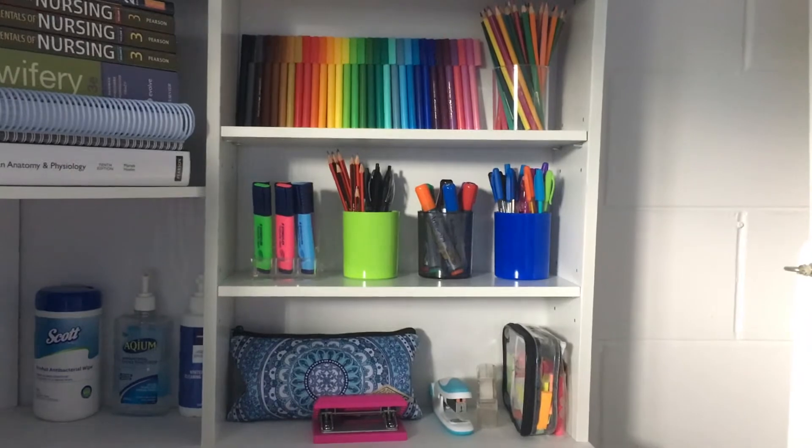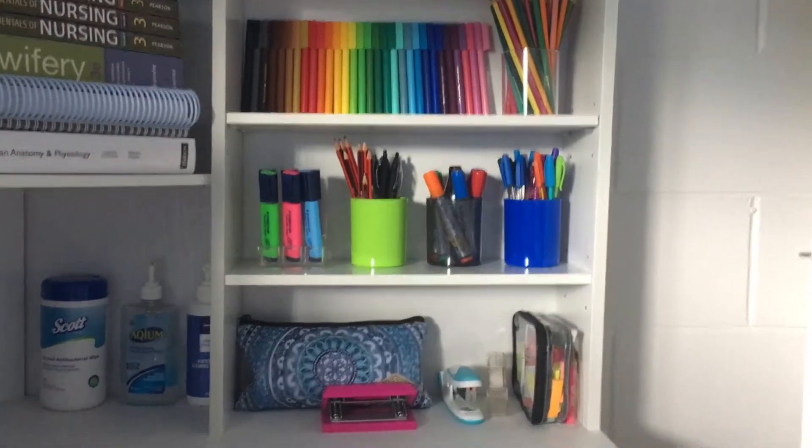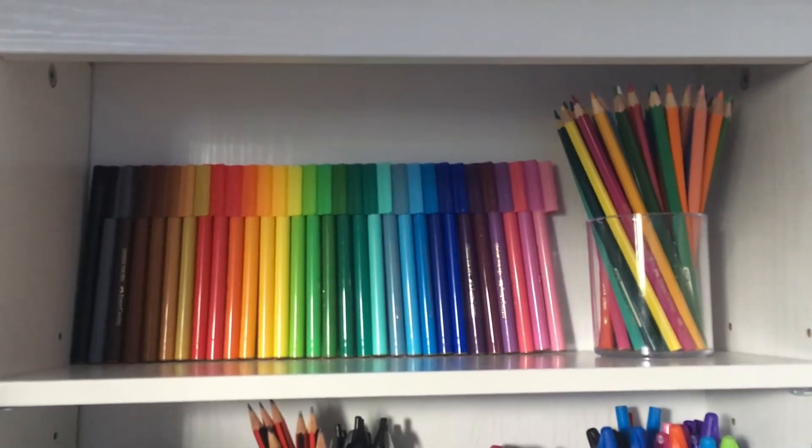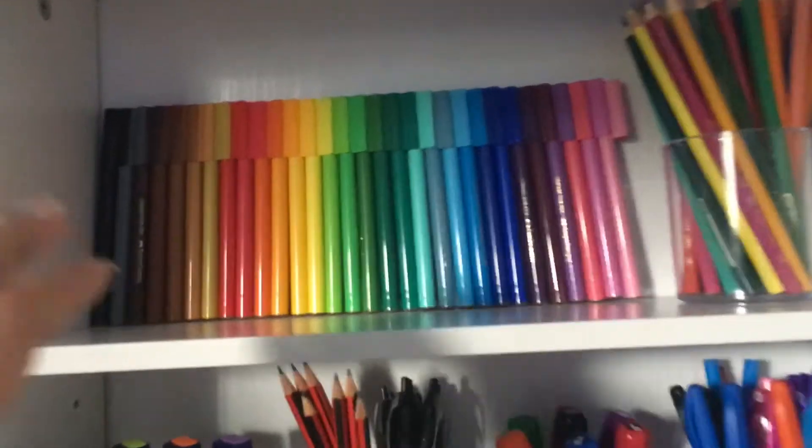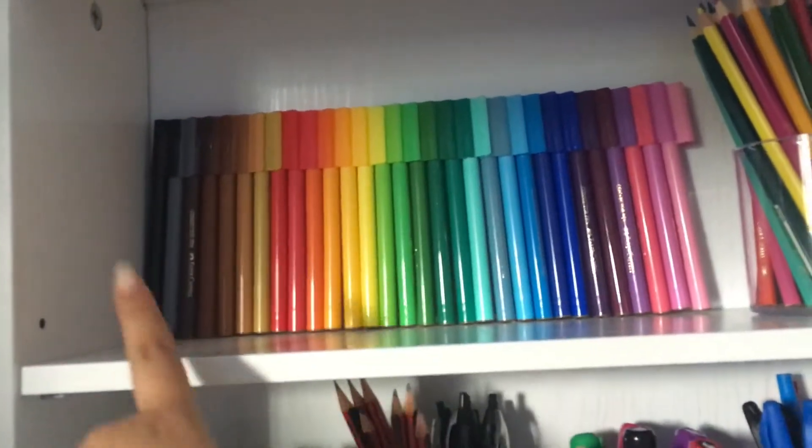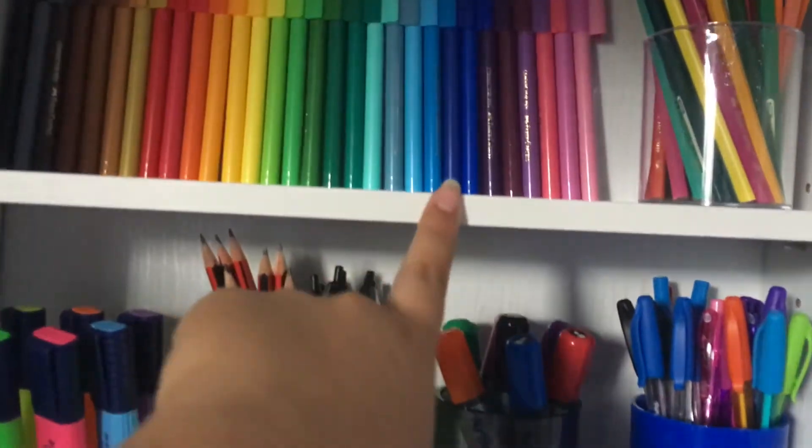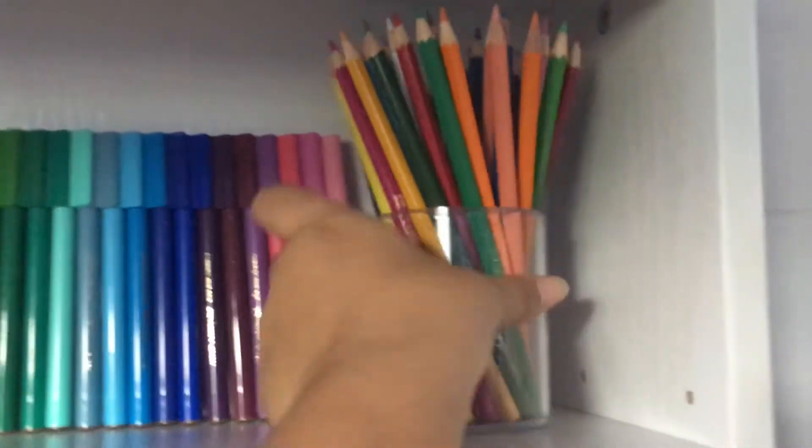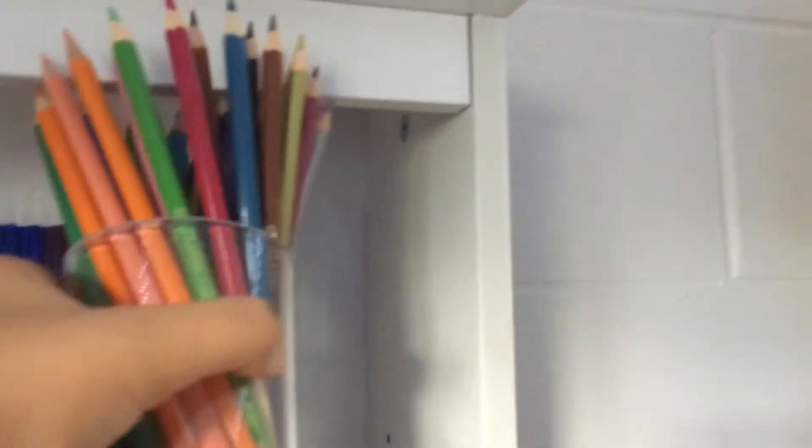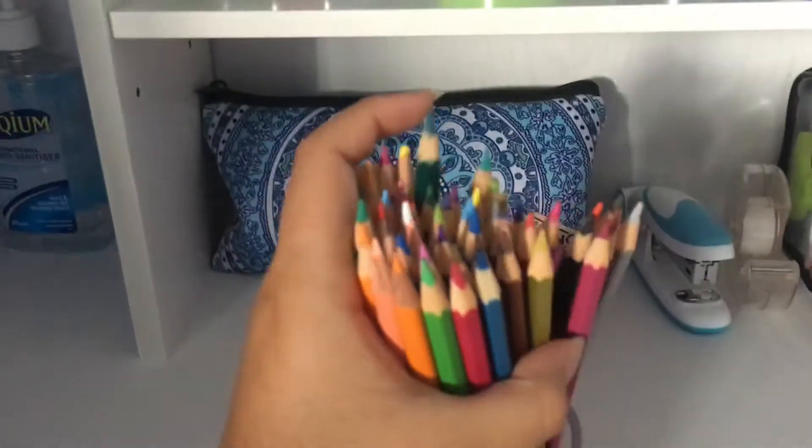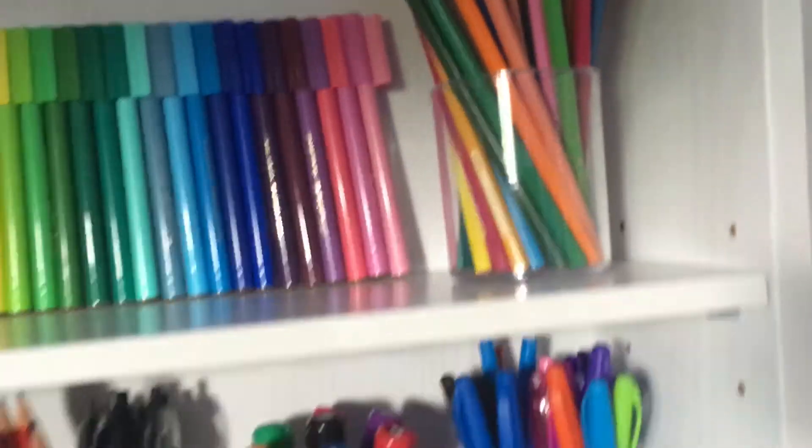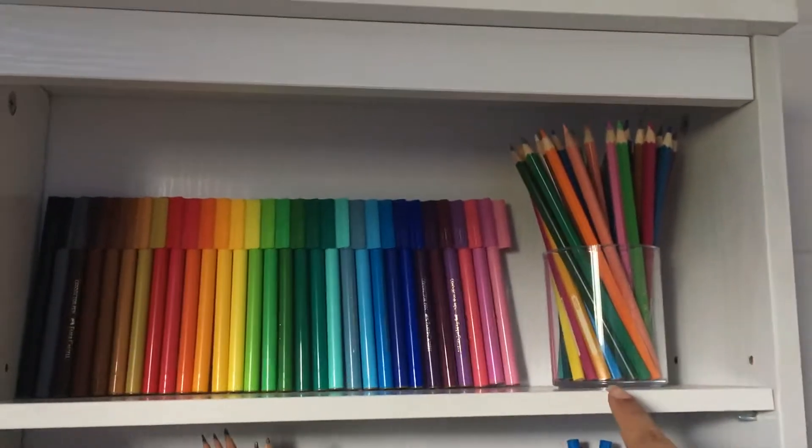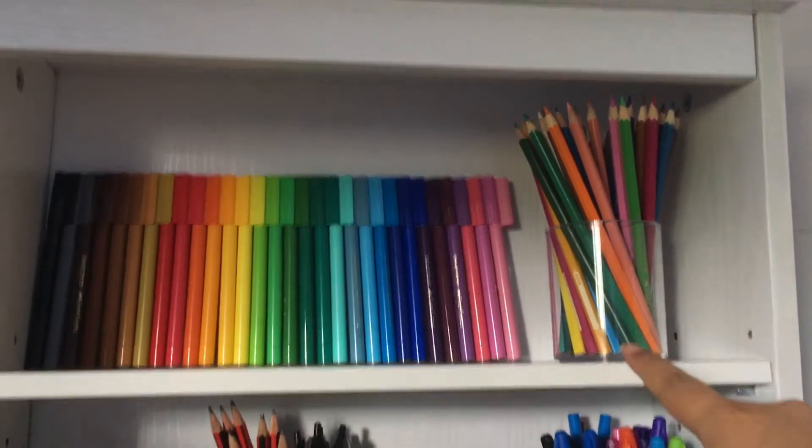Okay, so this is my little stationary shelf. I'm going to start with the top shelf. On the top shelf are all my coloring markers and pencils for my anatomy and physiology coloring book. I've got a whole bunch of markers here, all different colors - about thirty-something of them. They were about $15, and the clear little pen cup was about $5 from Officeworks.